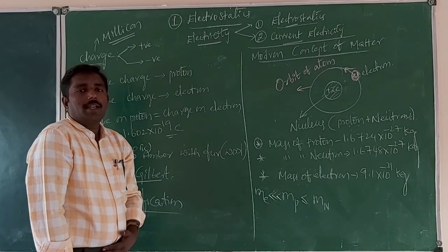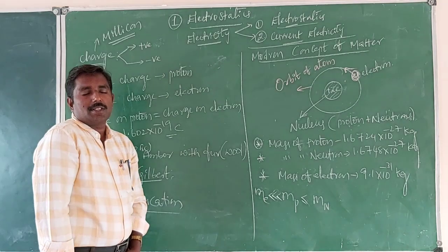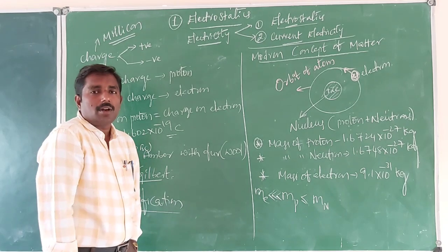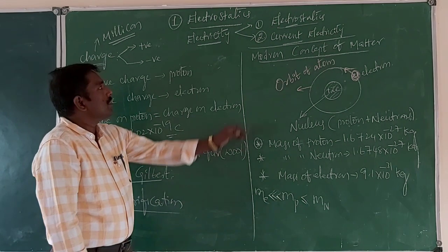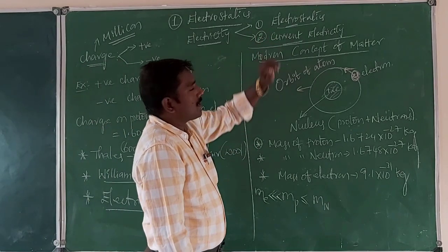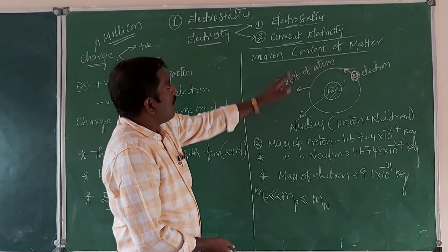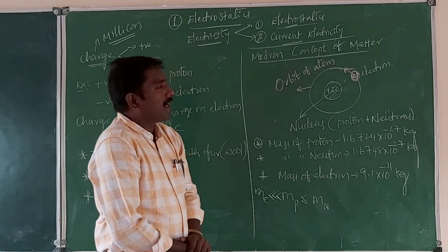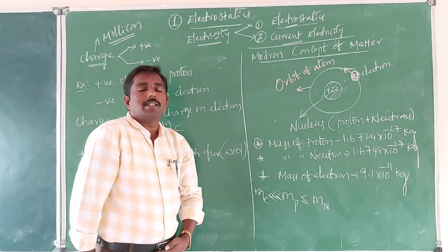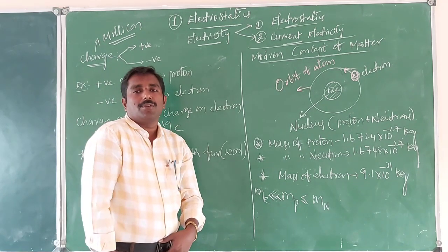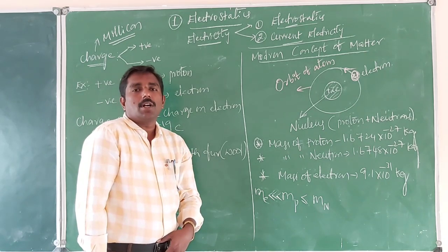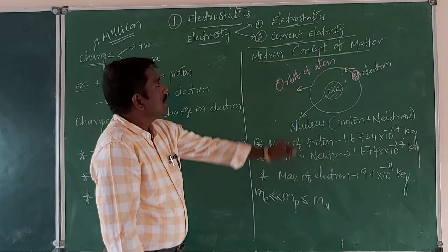Electricity is the branch of physics that deals with the study of charging bodies. It is divided into two categories. The first one is Electrostatics, and the second one is current electricity. Electrostatics is the branch of physics that deals with the study of charging bodies at rest.